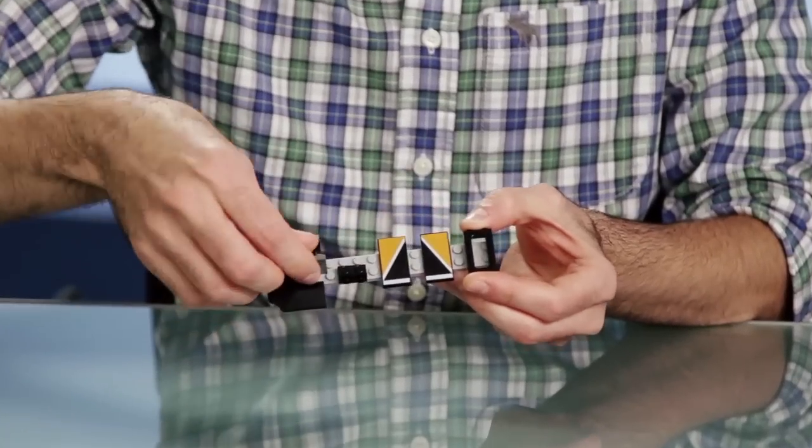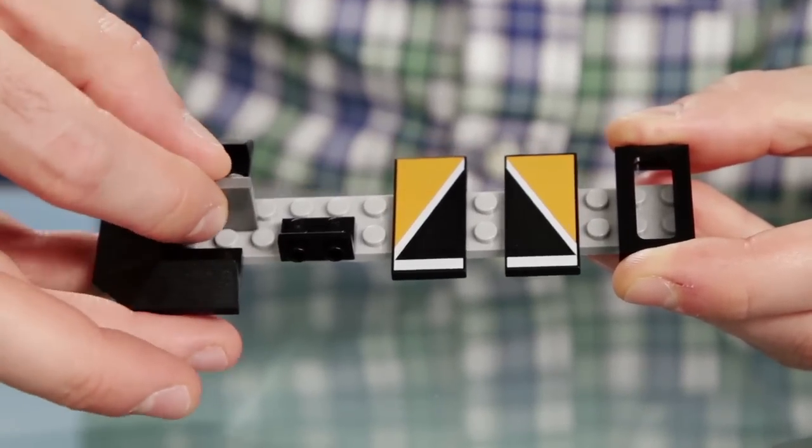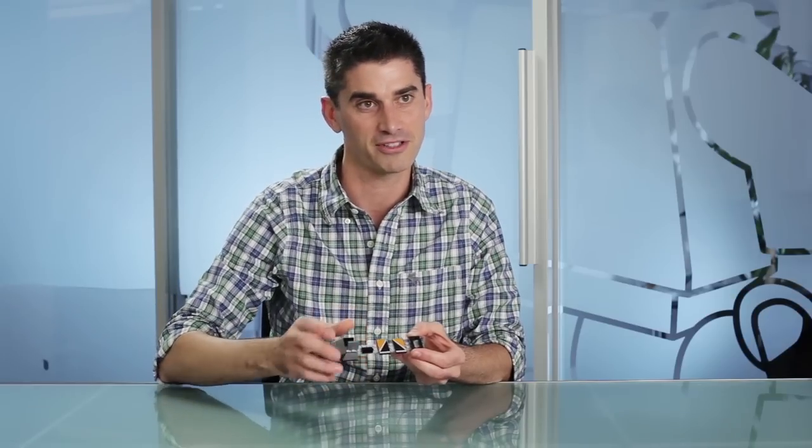In addition to that, we have a new tile. And this tile is an inverted tile. So it gives you a nice smooth surface on the underside that I know a lot of you fans that don't like the studs to show on your models, that'll really help polish them off and make them look nice.